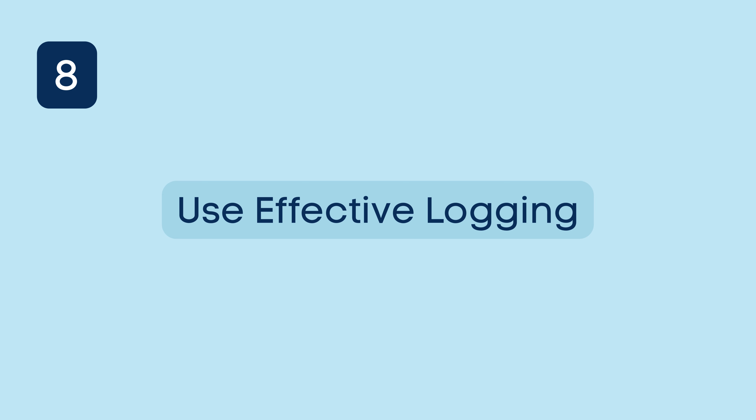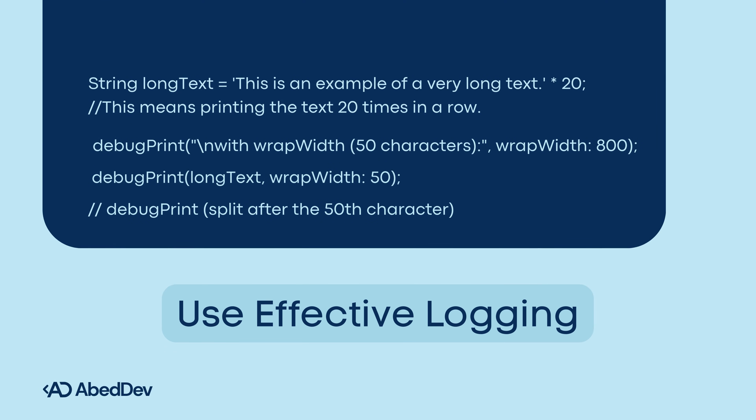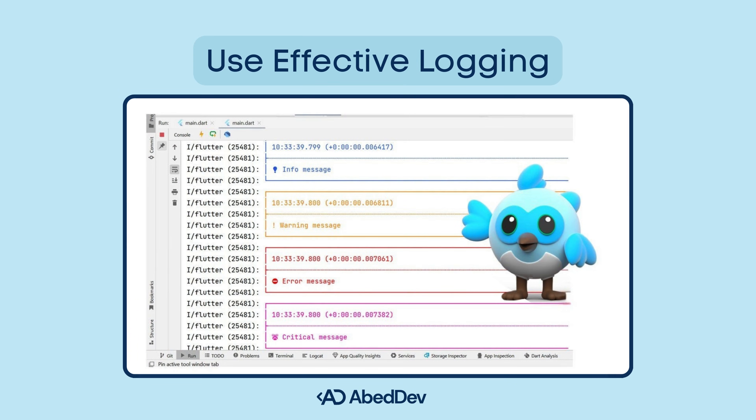Use effective logging. Relying on print is dangerous. Use structured, contextual logging instead. Best practices: use debugPrint instead of print to avoid performance issues with large logs. Use the logger package for colored, structured logs. Log only what's necessary. Group logs by feature or module for easier debugging.